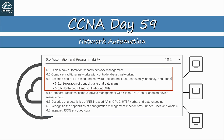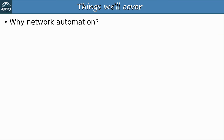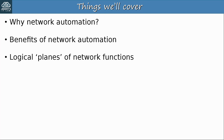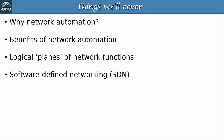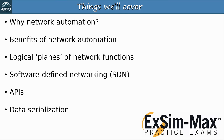In this video we'll mostly be looking at topics 6.1, 6.2, and 6.3, giving a general overview of network automation and its benefits. I'll give a quick overview of why network automation is used and some of its benefits. I'll then explain the logical planes of network functions — the data plane, control plane, and management plane. While introducing SDN I'll also introduce APIs and data serialization. Make sure to watch until the end for a bonus practice question from Boson Software's ExSim for CCNA, the best practice exams for the CCNA.